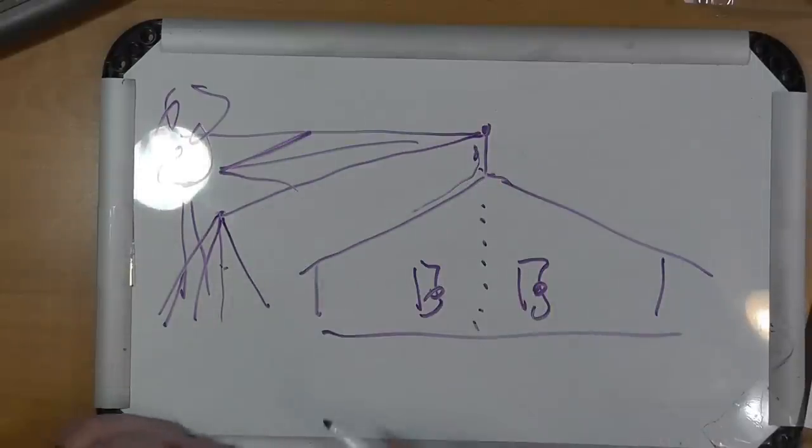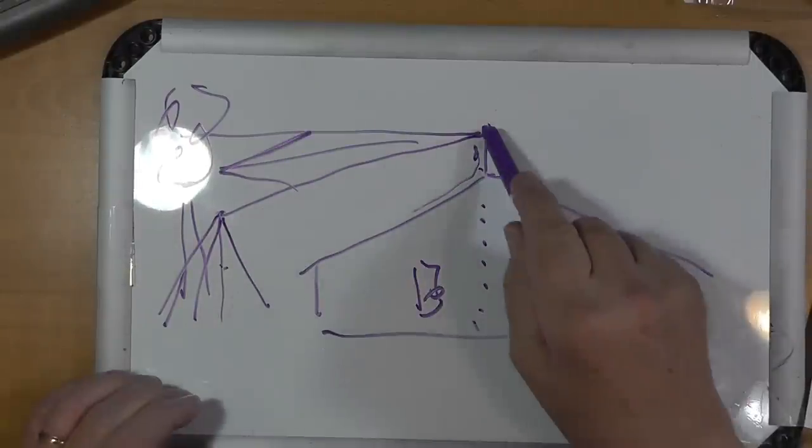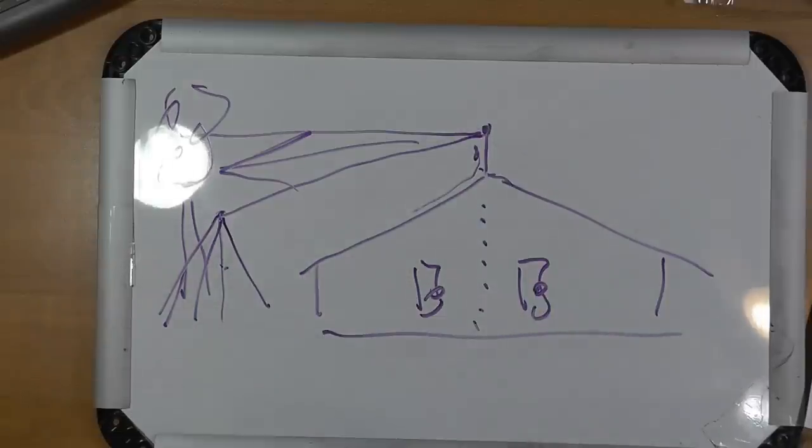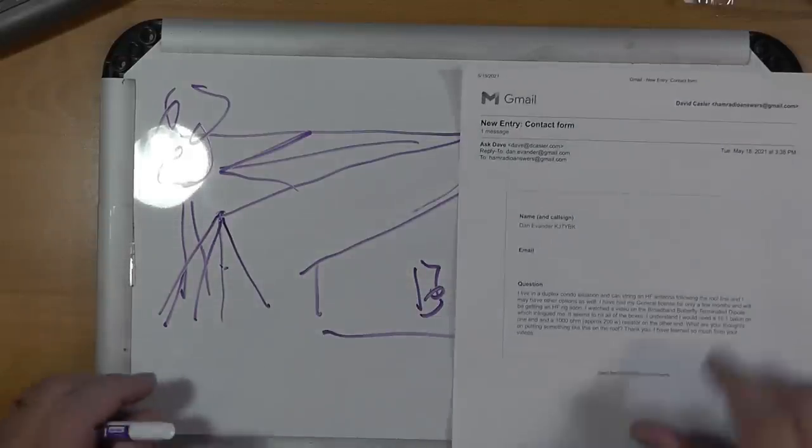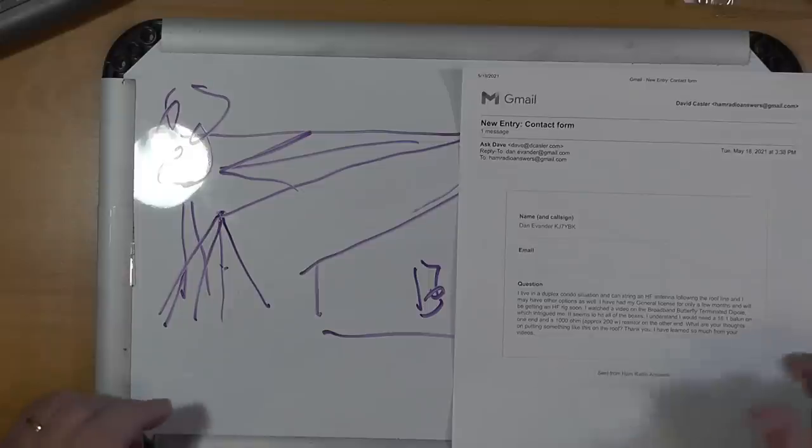So, I hope that helps answer that part of the question. Now, the radiation of this thing is going to be mostly this way. If this is the start of the antenna, this is the terminated end here. So, you're going to get more of a pattern. It'd be probably a cardioid pattern that you would get out of it.